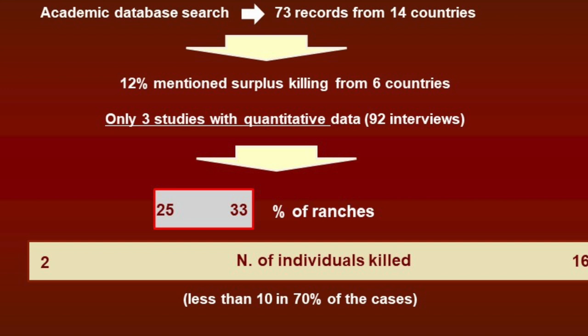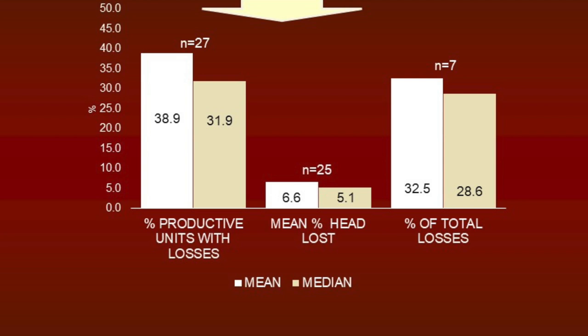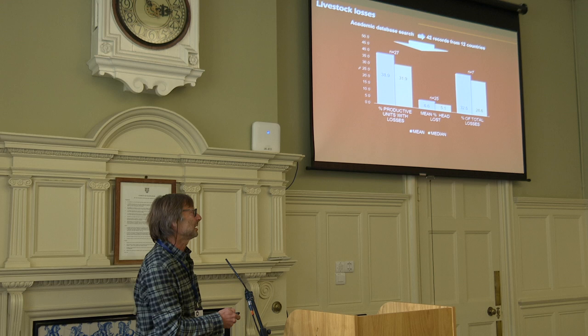What we found is that there is very little information about quantifying the real damage caused by pumas on livestock production. As you can see, the number of cases is kind of small. But the productive units — ranches or farms — affected by puma attacks can be great: the average is about 39%. The mean percentage of head loss by pumas with respect to total livestock in a ranch is small, at 6.6%.